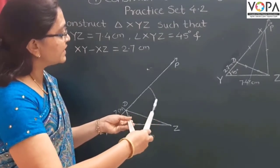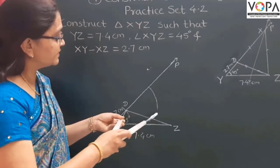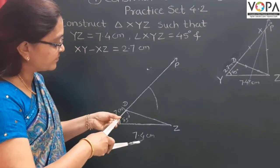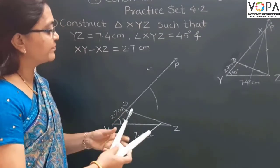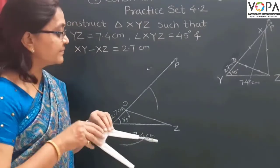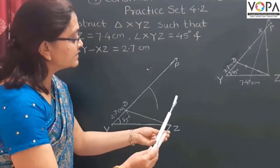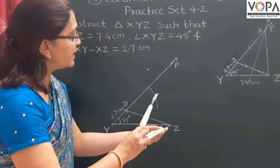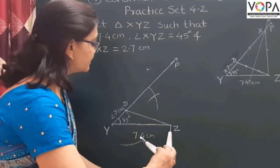Draw arcs on both sides of segment DZ. Then, without changing this radius, take Z as the center and draw another arc which intersects the previous one.